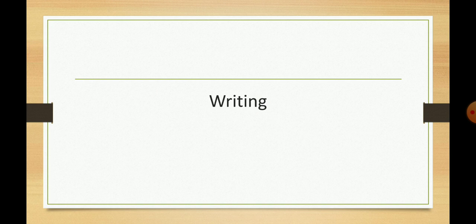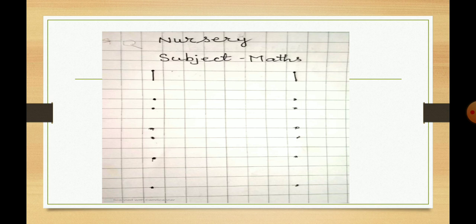Let's do writing practice. As you have learned standing line in English and Maths. So, 1 is a standing line which is drawn from up to down.